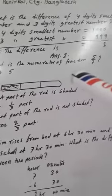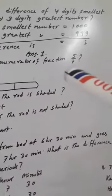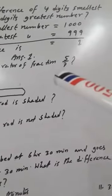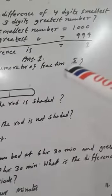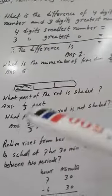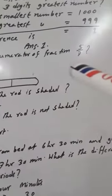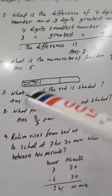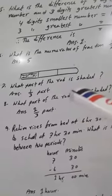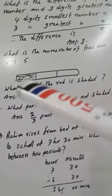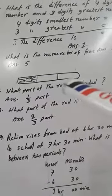What is the numerator of the fraction 5/7? This 5 is the numerator and 7 is the denominator. So the numerator is 5, the answer is 5; and the denominator is 7. Now, one rod — what part of this rod is color shaded? This rod is divided into 3 parts and one part is shaded.